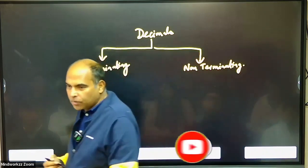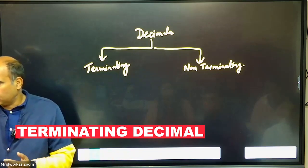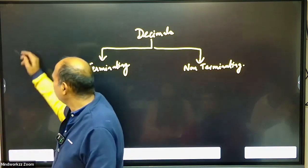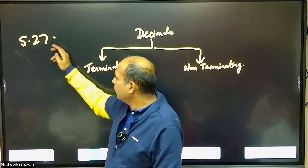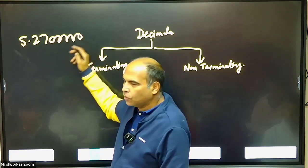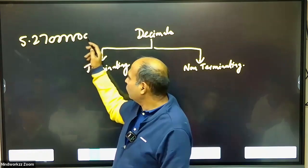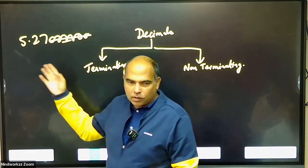So what are terminating decimals? A decimal which after the decimal point will end at some point—there is nothing after that. So if you write 5.27 and that is followed by a series of zeros, only zeros after that, so zeros have no meaning after decimal value-wise. This is called a terminating decimal.